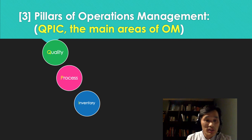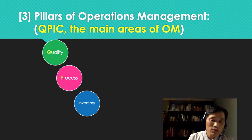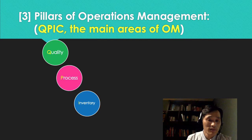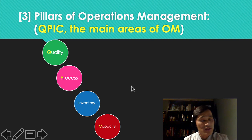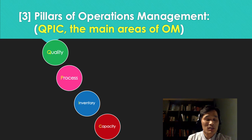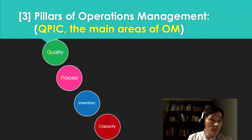I stands for inventory, which is another important part of operations management. Inventory can take up to 70% of business capital, so we have to be careful in managing it. C stands for capacity — how much do we want to produce, how many products do we want to have on hand? That's the topic of capacity, and we need to determine that too.